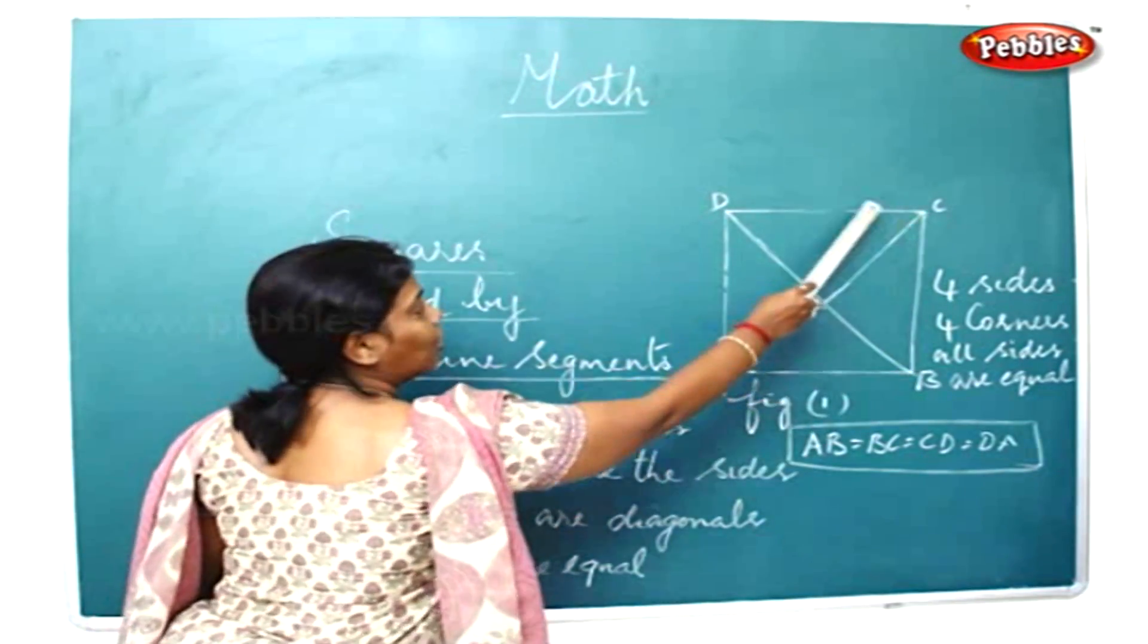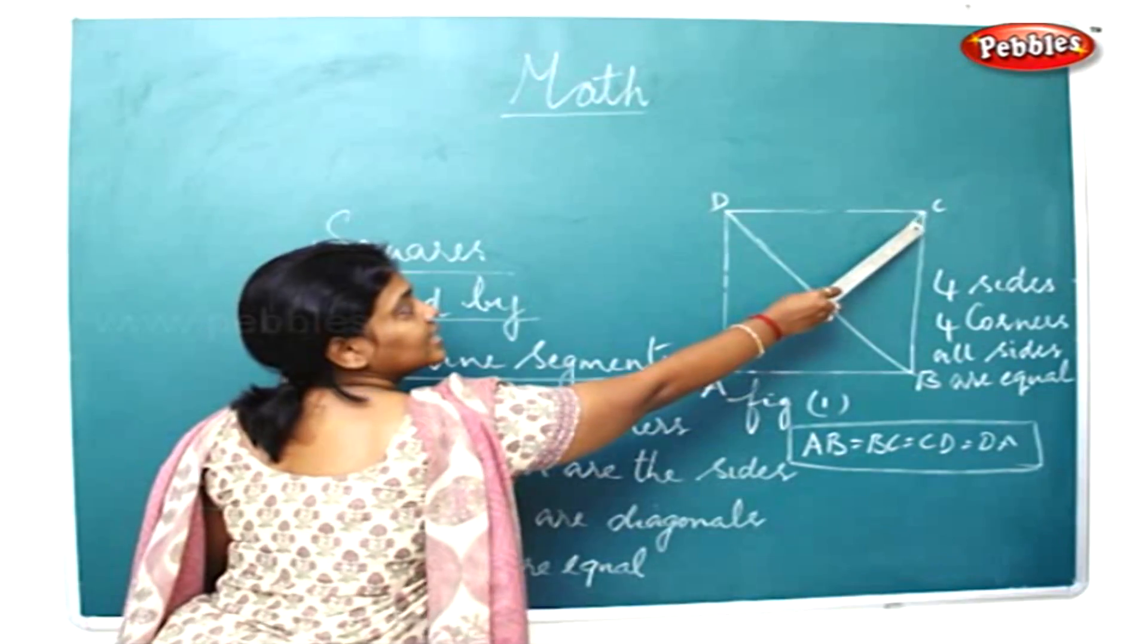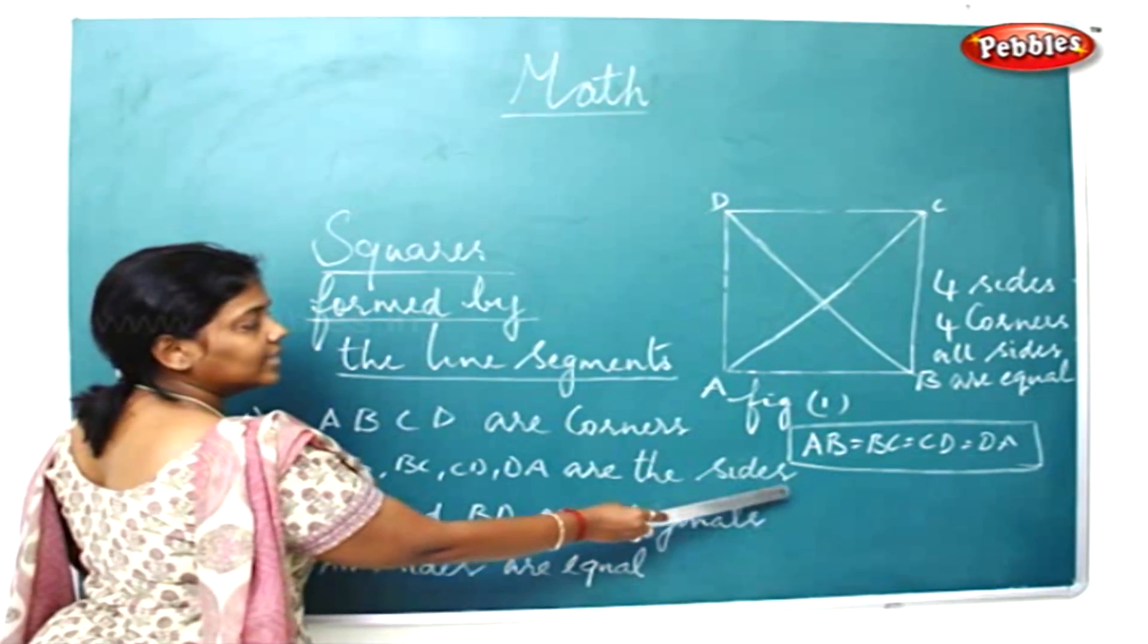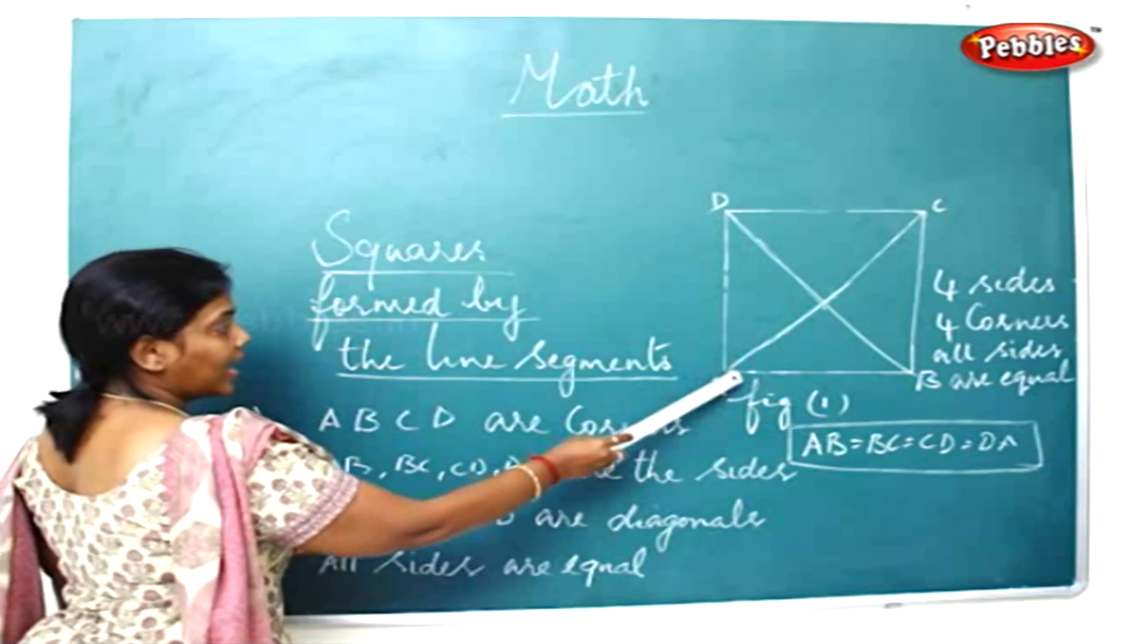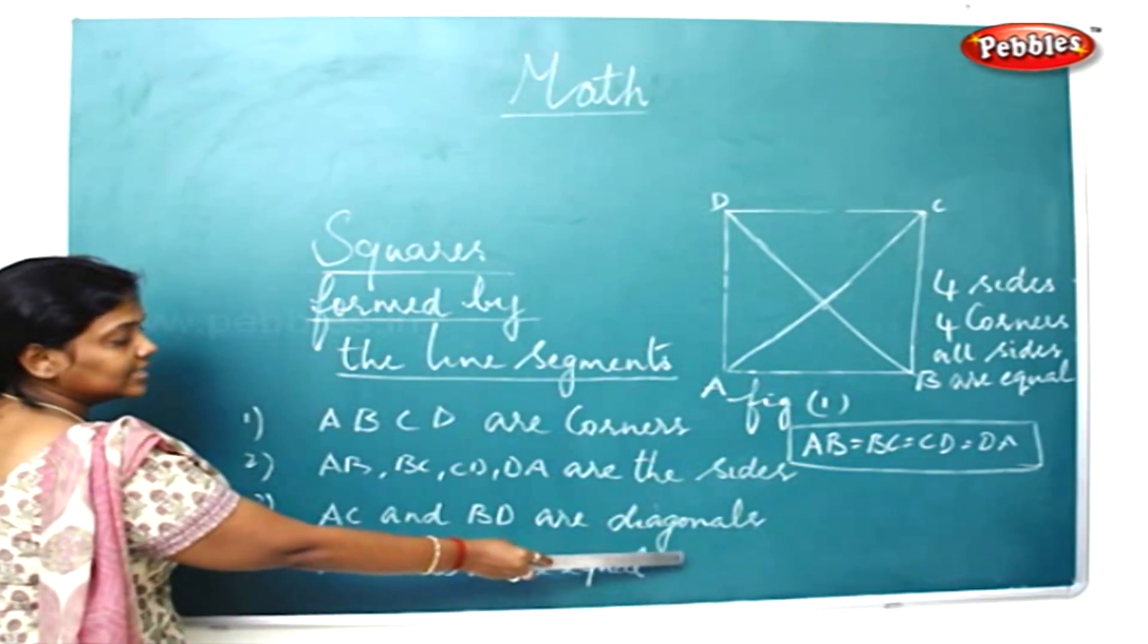They are the corners here. AB, BC, CD, and DA are the sides here. AC and BD are called the diagonals.